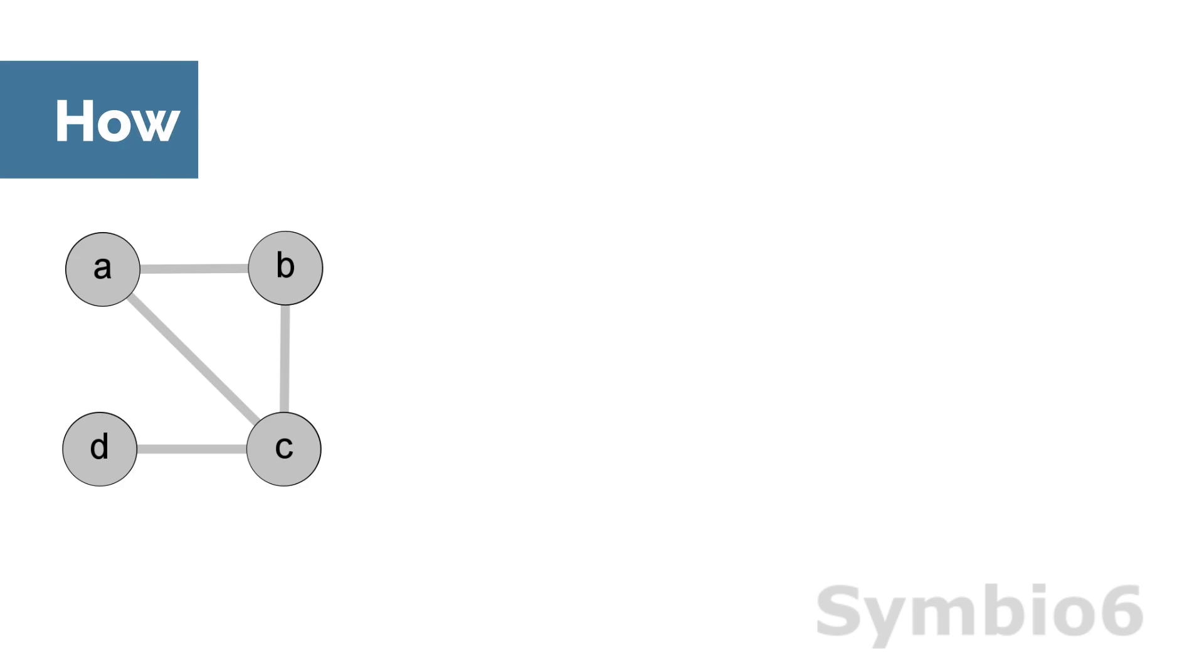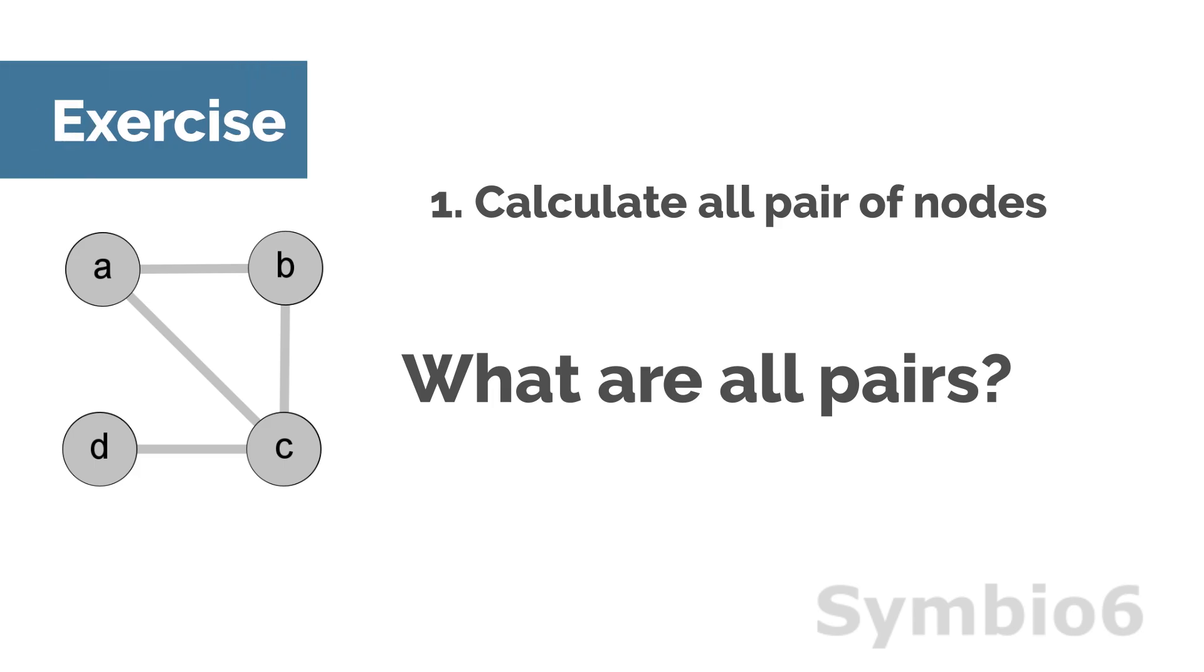This centrality attempts to capture the role of nodes as a bridge between other groups of nodes. To determine the betweenness centrality, we must first calculate all pairs of nodes of a network. What are all pairs in this undirected network?